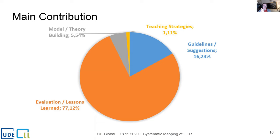Another category of our systematic mapping concerns the main contribution of the studies. The figure clearly shows that the majority of the studies we investigated — almost 80 percent — are focused on the evaluation of implemented OER projects, measures, or interventions. In contrast, there are hardly any contributions that intend to develop concrete action recommendations for teachers dealing with OER, or that contribute to theory building for OER, or that outline implementation strategies.